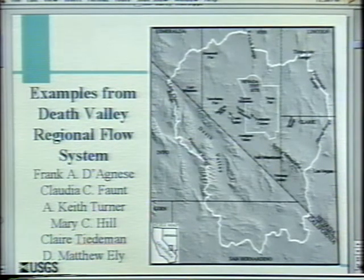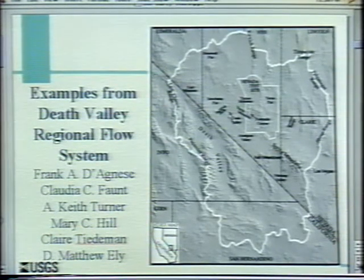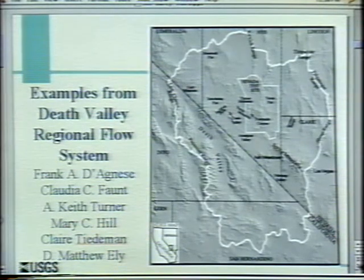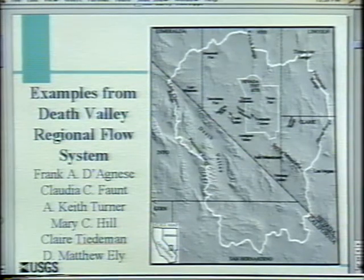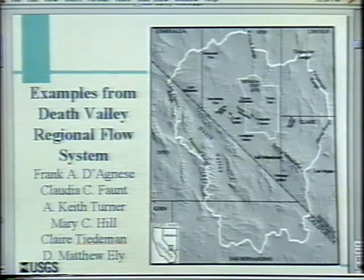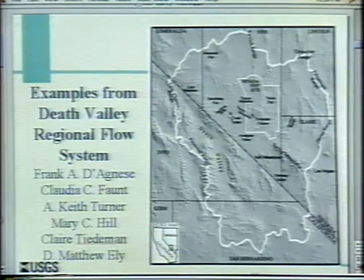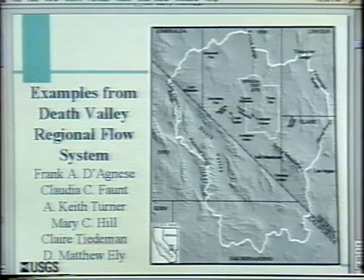I'm going to discuss the guidelines in the context of a particular problem, just to add some interest. The examples are going to come from the Death Valley regional flow system. My co-authors on this work are Frank Dagnis, Claudia Font, Claire Tiedemann, Matt Ely — all from the US Geological Survey — and Keith Turner from Colorado School of Mines and Delft Technical University.